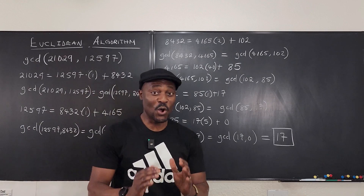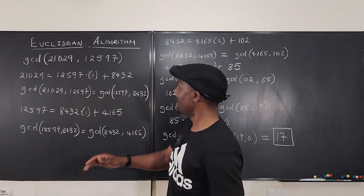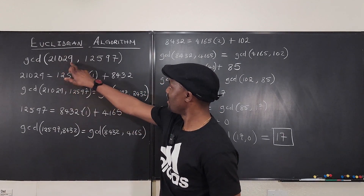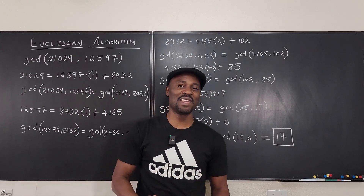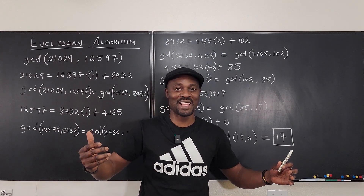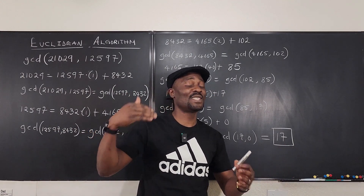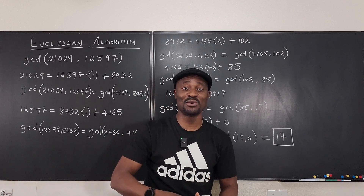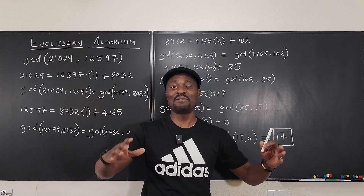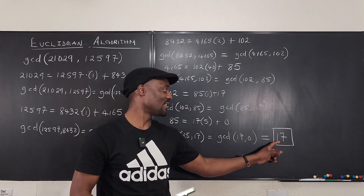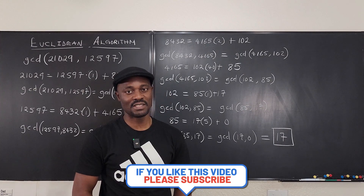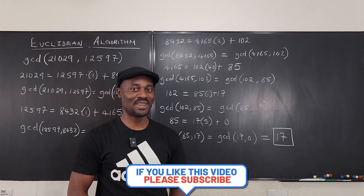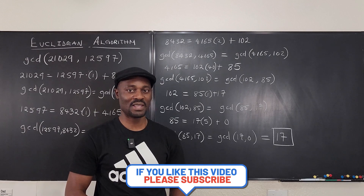Once you get zero, you've reached the end of the algorithm. The biggest number that can divide 17 and also divide 0 is 17 itself. So the greatest common divisor of our original two large numbers is 17. Never stop learning — those who stop learning have stopped living.